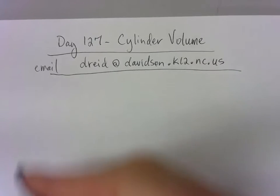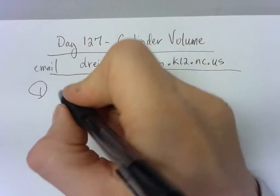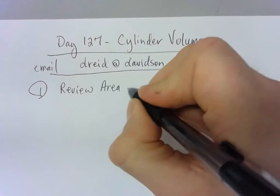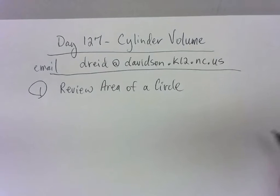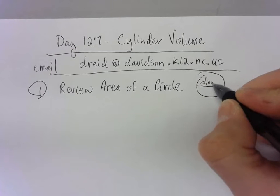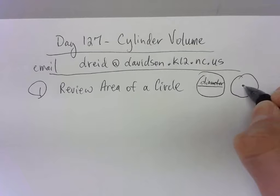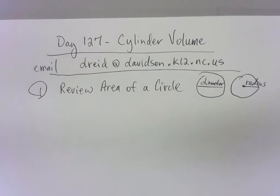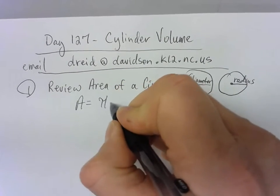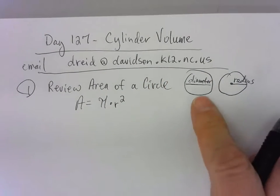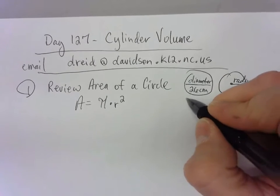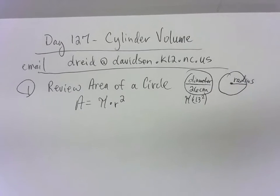Today we're going to start by talking about the cylinder, by reviewing how to get the area of a circle. The circle has either a diameter that goes all the way across or a radius that goes halfway across. The area of a circle formula is pi times radius squared. For example, if the diameter is 26 centimeters, you would do pi times 13 squared to get the area.